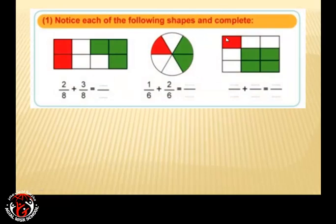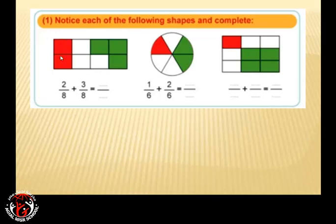Now take each of the following shapes and complete. In the first shape, we have 2 red parts over a total of 8 parts, and 3 green parts over a total of 8 parts. So 2 over 8 plus 3 over 8 equals what? 2 plus 3 equals 5. And the denominator stays the same — 8 plus 8 does NOT equal 16. We put the same denominator: 8.